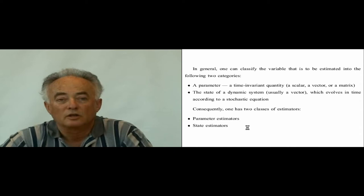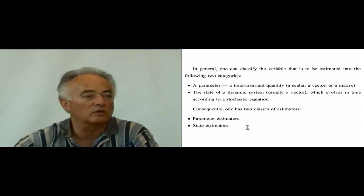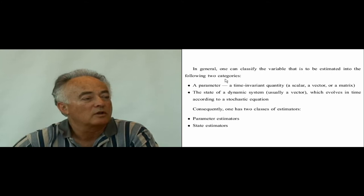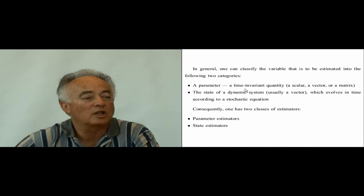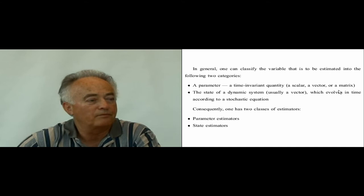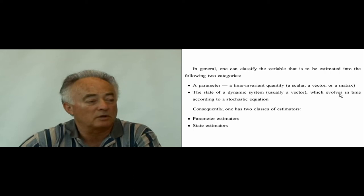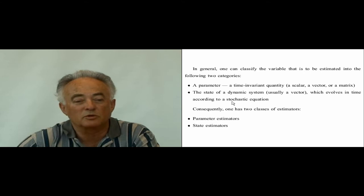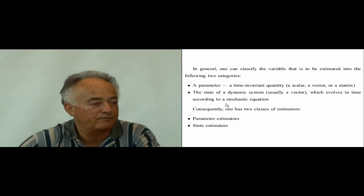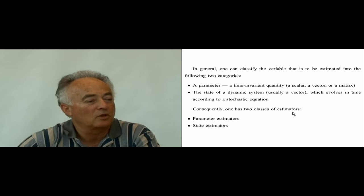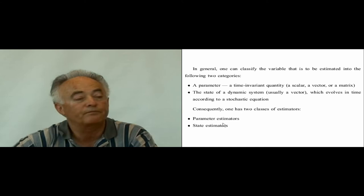We can classify estimation techniques based on the variable of interest. There are two categories. First, the variable of interest is a parameter — a time-invariant quantity, which can be a scalar, vector, or matrix. Second, the quantity of interest is the state of a dynamic system, usually a vector that evolves in time according to a stochastic equation. Consequently, we have two classes of estimators: parameter estimators and state estimators.